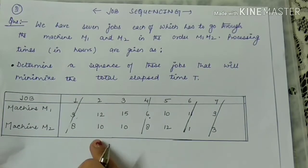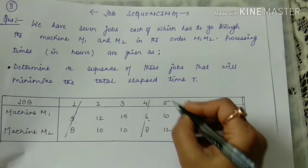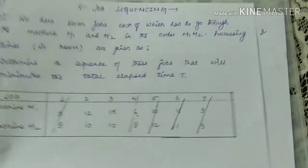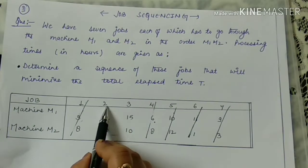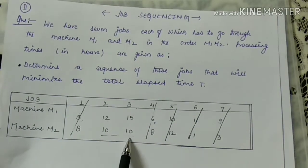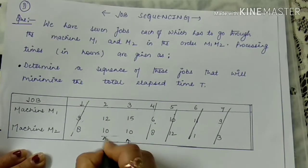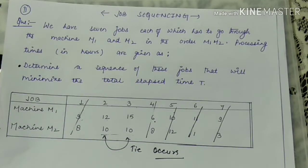For M1 again, remaining values are 12, 15, and 10, so 10 is the minimum — that means the fifth job requires minimum time of 10 hours, so 5 is written here. Now for M2, jobs 2 and 3 require the same hours, which means there is an occurrence of a tie with respect to machine M2 and jobs 2 and 3.